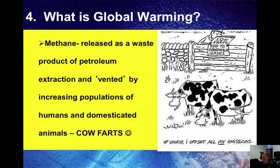Methane is the last greenhouse gas we're going to talk about. It is released as a waste product of petroleum extraction, and it's also vented by increasing populations of humans and domesticated animals through flatulence. So with an increasing population of different animals, including ourselves, we're increasing the level of methane — another greenhouse gas — in the atmosphere.